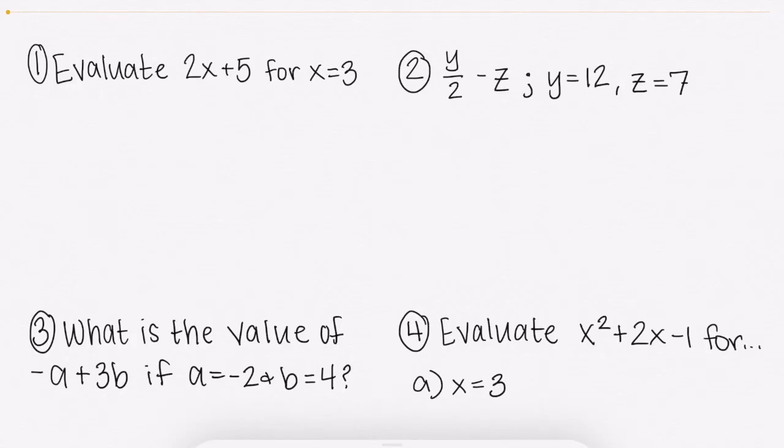All right, so as you can see here, I have my four examples that we're going to go over. So the first one is worded, you know, the typical way you'll see it. Evaluate 2x plus 5 for x equals 3. Now if we were given just 2x plus 5, we can't do anything, right? We don't know what that equals. We can't solve for x. All we can do is plug in if we know what x is. So we know x equals 3, so we're going to rewrite our equation, 2, and instead of x, we're going to replace it with what it equals, 3.